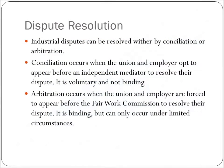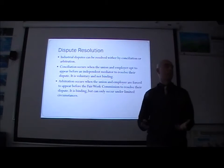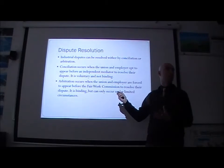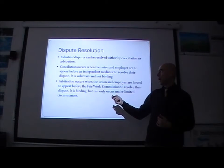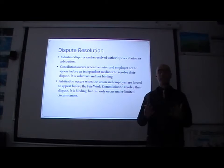Industrial disputes can be resolved either by conciliation or arbitration. Conciliation occurs when the union and employer agree to appear before an independent mediator to resolve their dispute. It is voluntary and not binding — both parties have to volunteer to appear, and at the end they don't have to accept the decision of whoever is leading the conciliation.